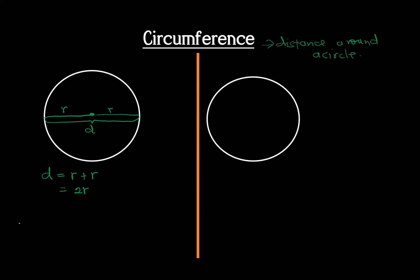When we need circumference — we call it C — we are going to use the formula 2πr. Or if you do not want to use 2πr, you can say circumference equals πd, because 2 and r together form d. So πd is the same as 2πr.